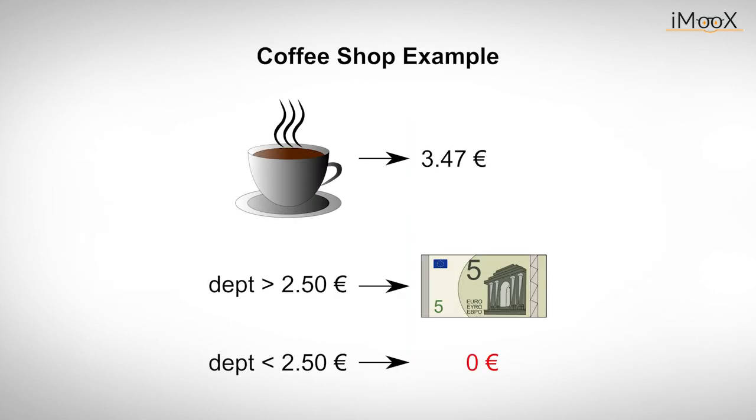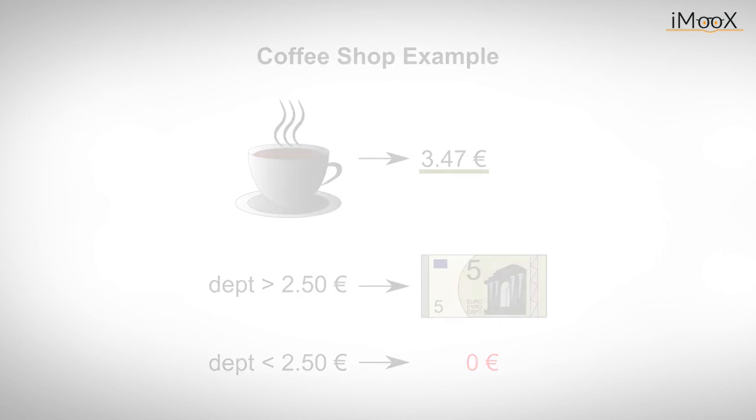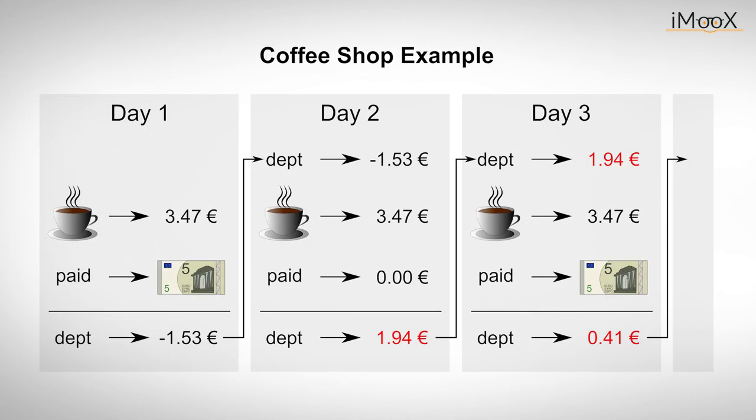The agreement between the two parties is as follows. Every day, if the engineer owes the cafe more than 2 euros 50 cents, he gives the shop assistant a 5 euro bill. If he owes less than 2 euros 50 cents instead, he pays nothing. The engineer also keeps track of how much he owes the cafe. The transactions for the first three days are shown here. On the first day, the engineer pays 5 euros as agreed. He notes at the end of the day that he owes the cafe minus 1.53 euros.